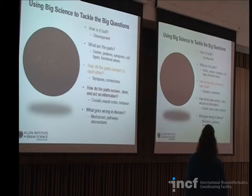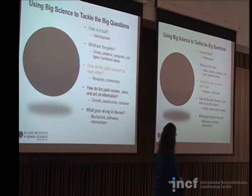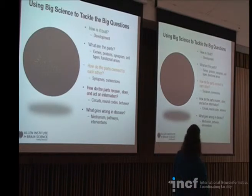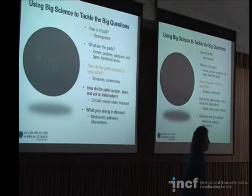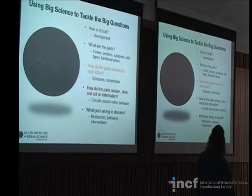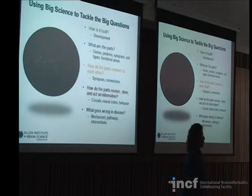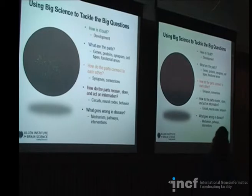We like to say we use big science to tackle the big questions. We look at development to find out how things come to be. We look at the parts — the genes, the proteins, the synapses of different functional areas. We want to know how things are connected, how cells make direct connections. We want to know how the parts receive, store, and act on information, and what goes wrong in disease. Our tools are designed to answer these questions at one or multiple levels for a given project.